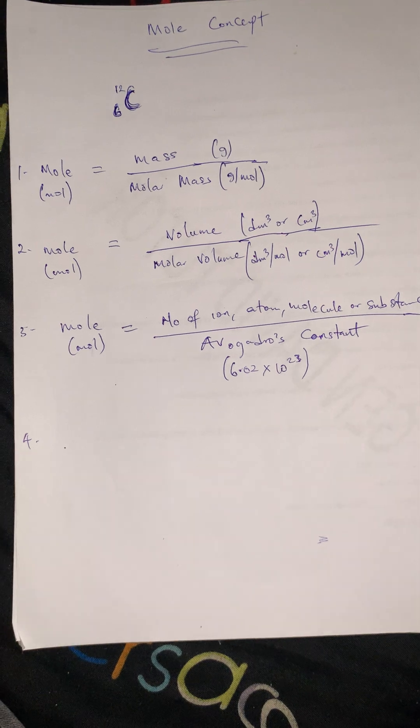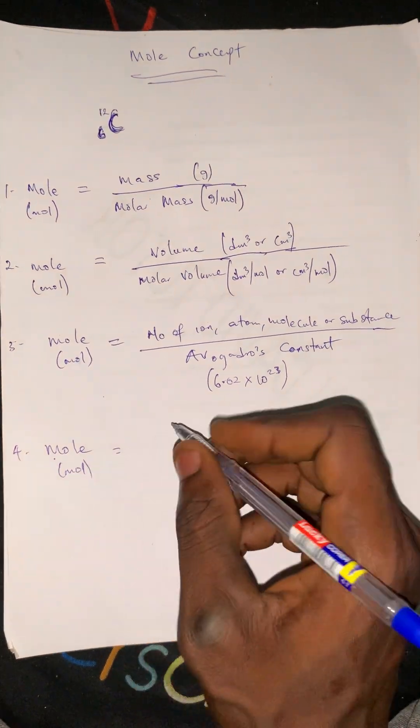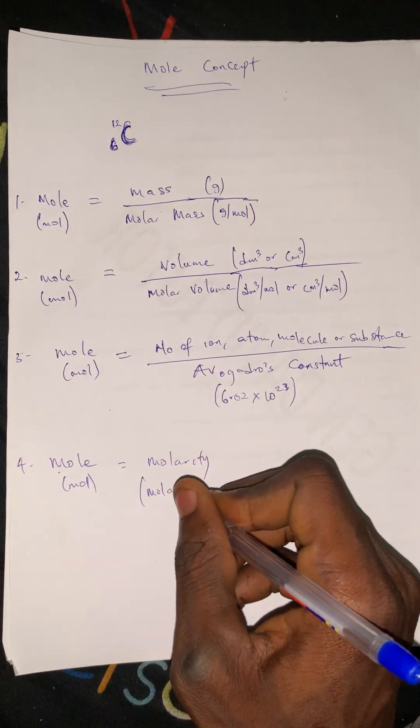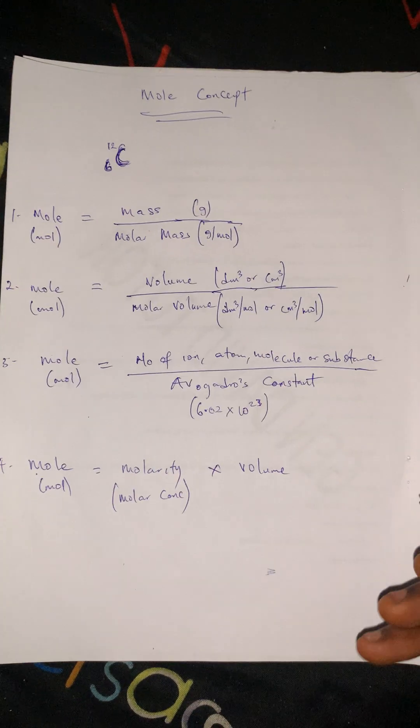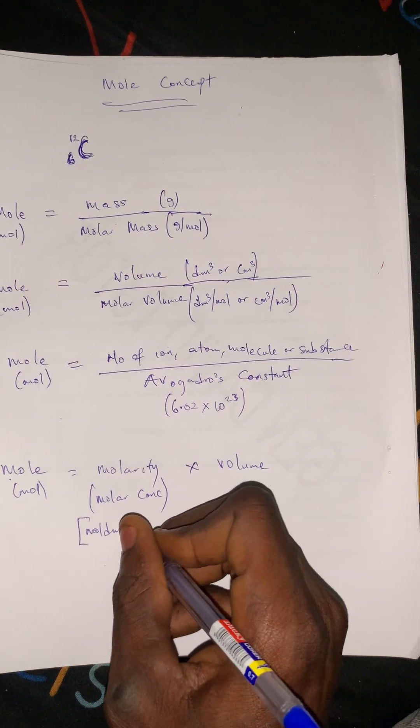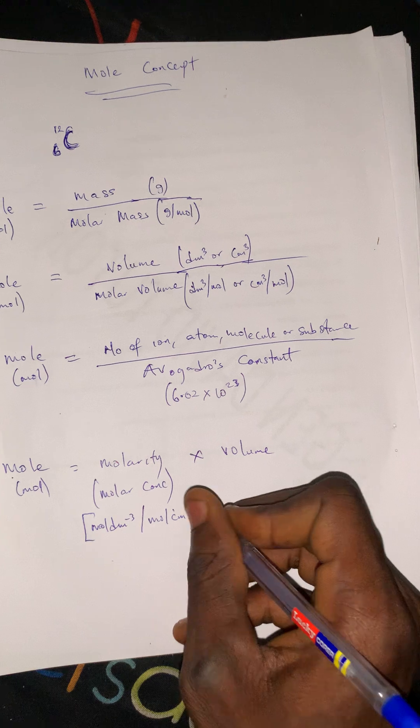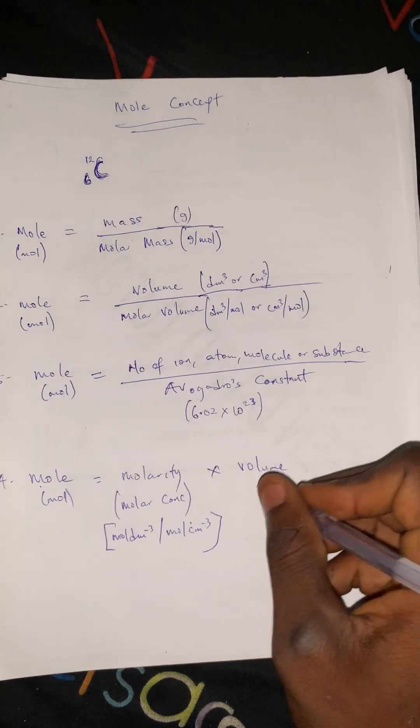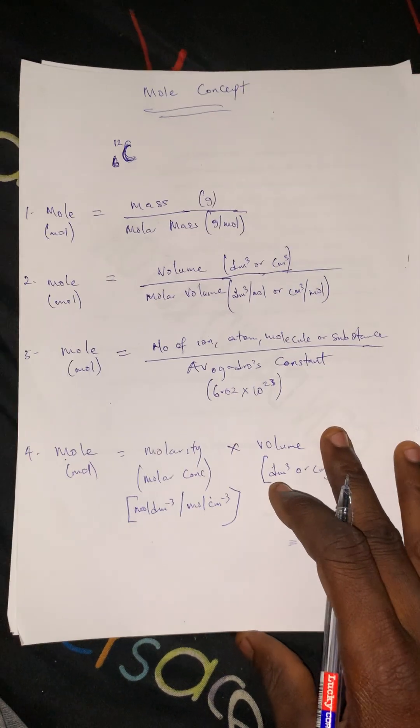We can also have the number of moles to be molarity, which can also be known as molar concentration, times volume. And don't forget, the molarity here can be measured in moles per dm³ or moles per cm³, and volume can be measured in dm³.